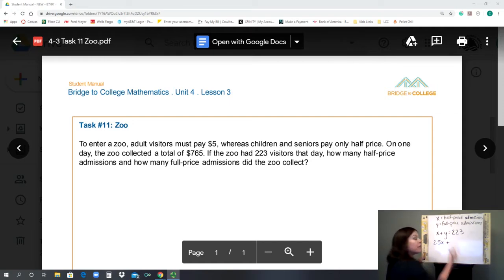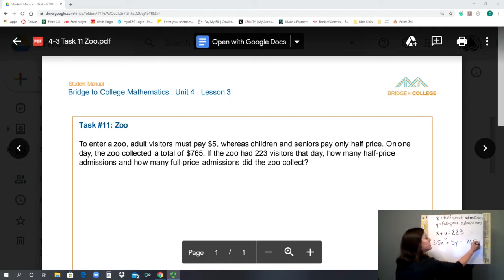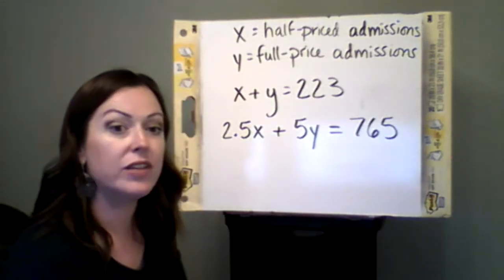Then added to that is the money that I earned off of the full-price admission. Full-price admission is $5 per admission. Now how much did I collect altogether from those tickets? The story problem said 765. I now have a system.